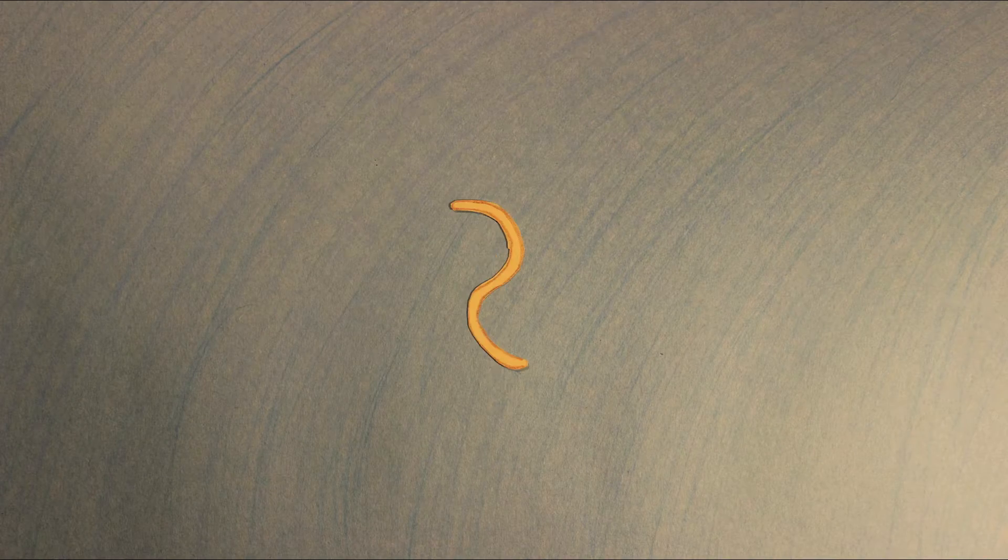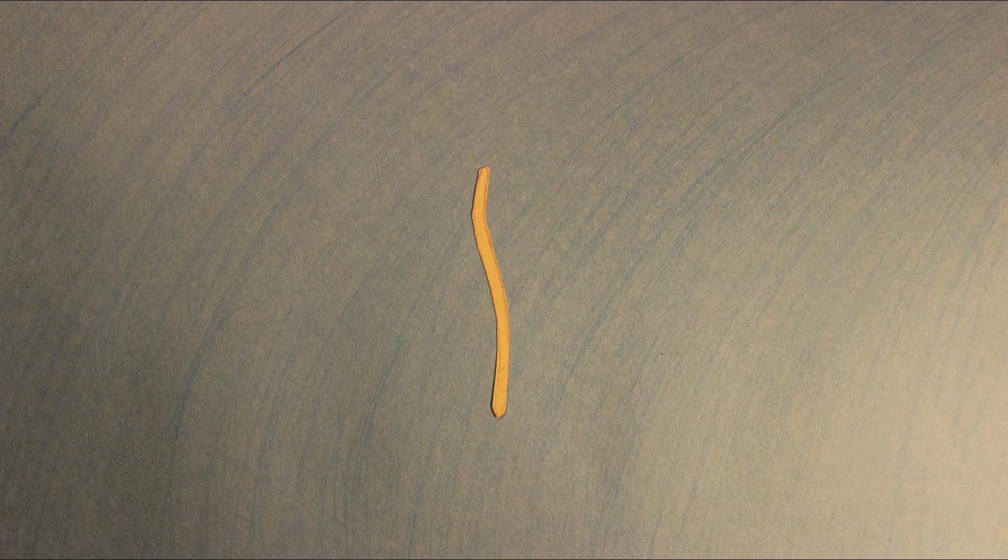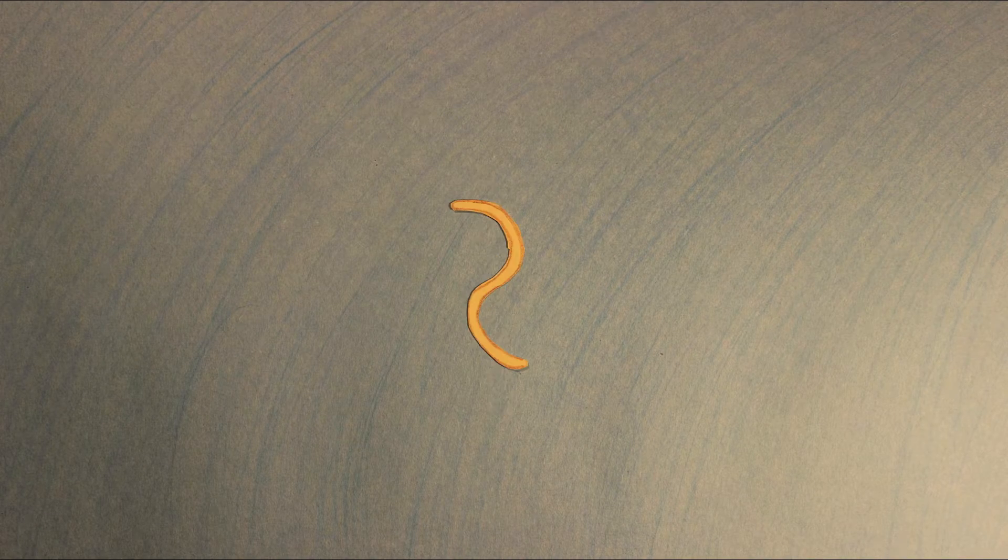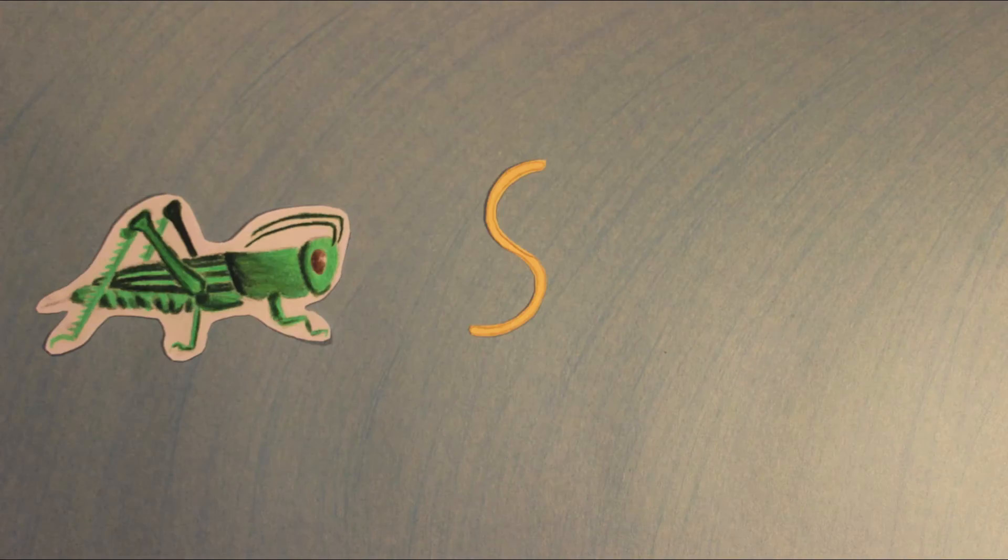For part of their life, these thin worms are parasitic and need to feed in another organism. However, hairworms face a small problem. They need to feed in land insects, such as crickets.